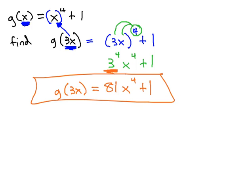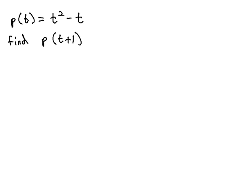Let's try one more example. Here we have p of t is equal to t squared minus t, and we're asked to find p of t plus 1. And notice that entirety of t plus 1 is replacing the t in the p of t notation. This means wherever we see a t in the function, we're gonna replace it with t plus 1.